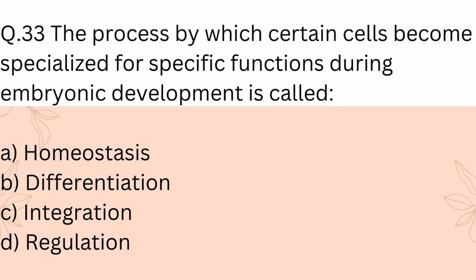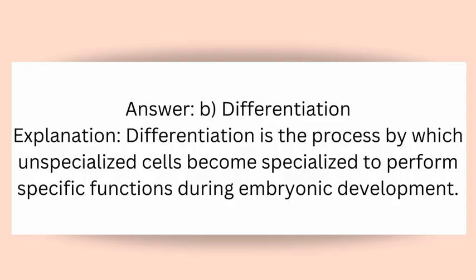Question 33: The process by which certain cells become specialized for specific functions during embryonic development is called? A) Homeostasis, B) Differentiation, C) Integration, D) Regulation. Answer: B) Differentiation. Explanation: Differentiation is the process by which unspecialized cells become specialized to perform specific functions during embryonic development.